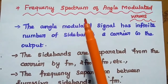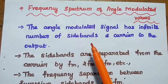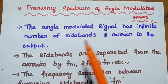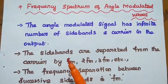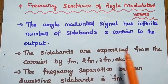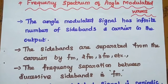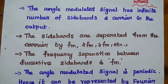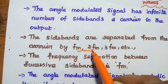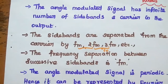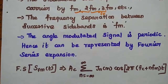Now we are going to obtain the frequency spectrum of angle modulated waves. The bandwidth of angle modulation is very high, so due to the wide bandwidth, the angle modulated signal has an infinite number of sidebands and a carrier in the output signal. The sidebands are separated from the carrier by fm, 2fm, 3 times the modulating frequency, and so on. The frequency separation between successive sidebands is fm.